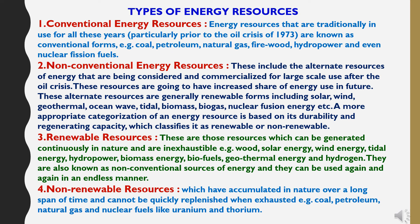Third is renewable energy resources. These are resources which can be generated continuously in nature and are inexhaustible, like wood, solar energy, wind energy, tidal energy, hydropower, biomass energy, biofuels, geothermal energy, and hydrogen. They are also known as non-conventional sources of energy and can be used again and again in an endless manner. Fourth is non-renewable energy resources, which have accumulated in nature over a long span of time and cannot be quickly replenished when exhausted, like coal, petroleum, natural gas, and nuclear fuels like uranium and thorium.